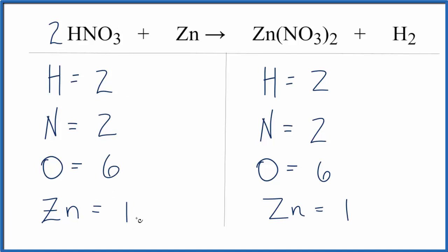And if you look at all these numbers here, they're the same on each side of the equation. Which means we're done. This equation is balanced. This is Dr. B with the balanced equation for HNO3 plus Zn, and thanks for watching.